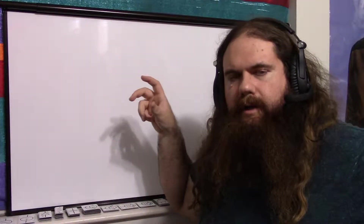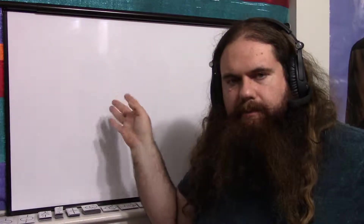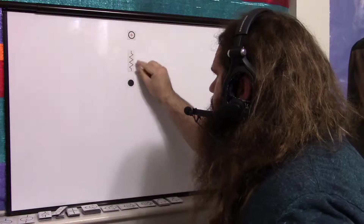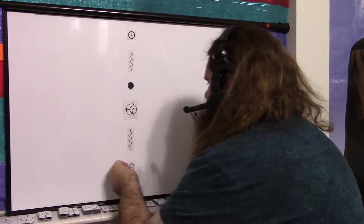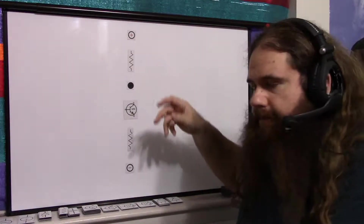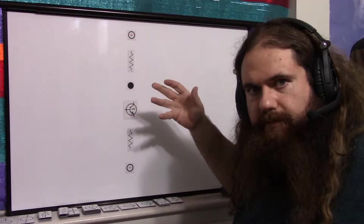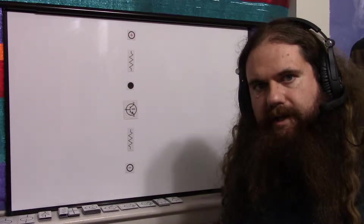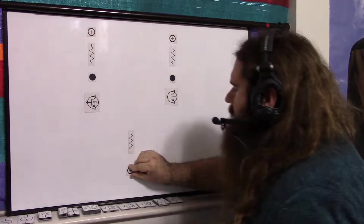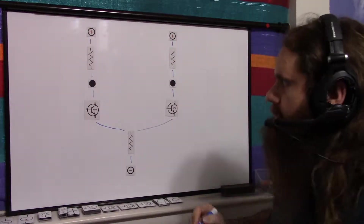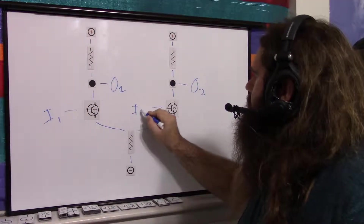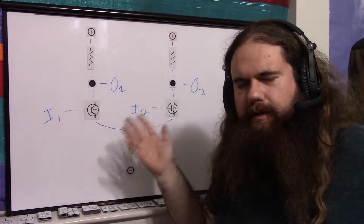So recall the simple common emitter amplifier. You have your positive connection, your resistor, your output spot, your transistor, your emitter resistor, and your connection to negative. The input is the base of the transistor, the output is this voltage, and it's inverted. A small change in the base gets you a large change in the output voltage. So what if we just stapled two of these together? Take another positive connection, another resistor, another output, another transistor, and share the resistor — hooked up in parallel. This gives us output one, output two, input one, and input two. This is a differential amplifier, a long-tailed pair, an analog comparator.